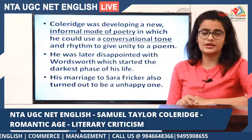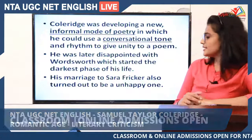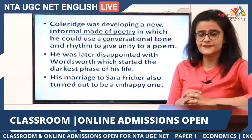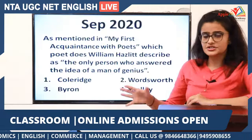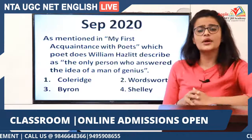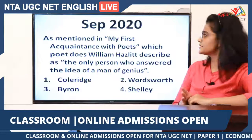Though his friendship with Wordsworth began the Romantic Movement, Coleridge later became dissatisfied with Wordsworth's ideas and they took a break, starting the darkest phase of Coleridge's life. His marriage to Sarah Fricker also turned out to be an unhappy one. The years after the publication of Lyrical Ballads and after his split from Wordsworth were not good years for him.